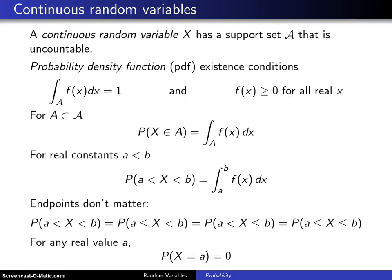Just as discrete random variables have their distributions defined by probability mass functions, continuous random variables have their probability distributions defined by probability density functions. So a continuous random variable X has a support set script A that is uncountable.